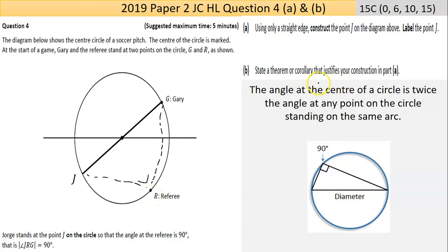Let's state the theorem or corollary that justifies your construction. This is the actual name of the corollary, but really if you get the idea across, there should be no problem. The angle at the center of the circle is twice the angle at any point on the circle standing on the same arc. You might get away with saying any angle off a diameter is 90 degrees. That's what this is basically saying.